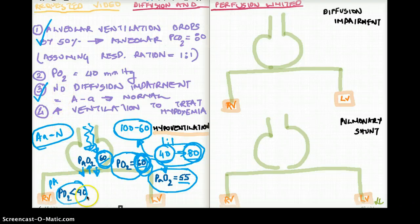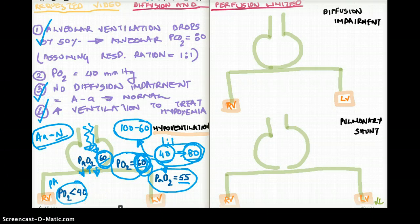How can you treat hypoventilation? If the A-a gradient is normal, you simply increase ventilation. You treat hypoxemia with increased ventilation — give the patient more oxygen — and things are going to get better.